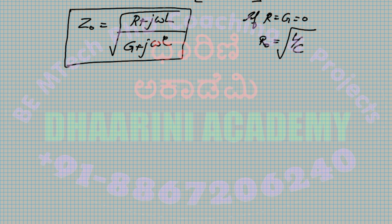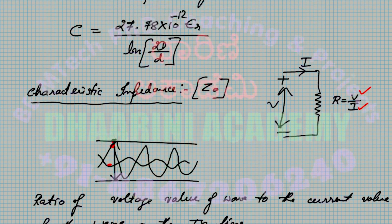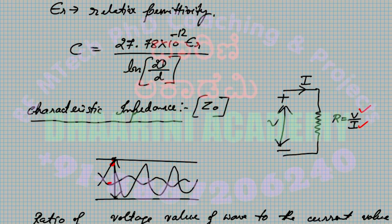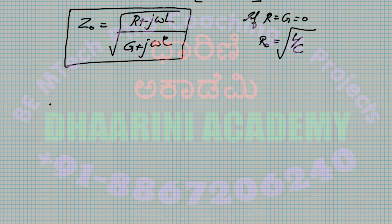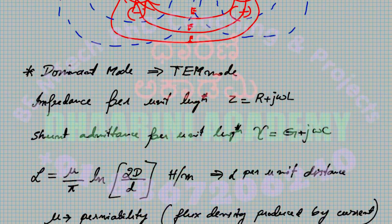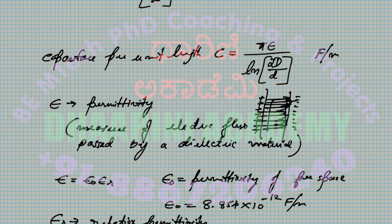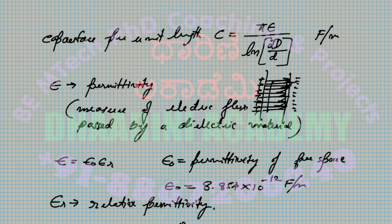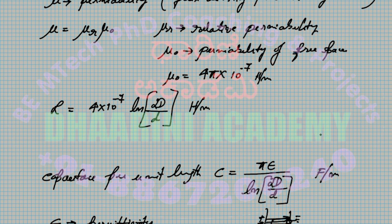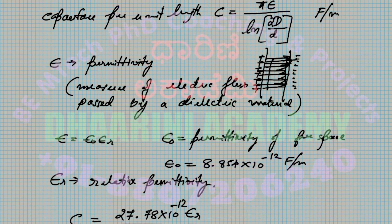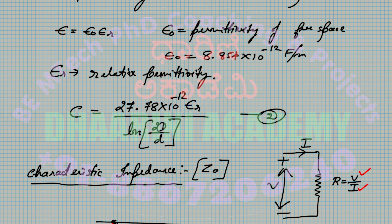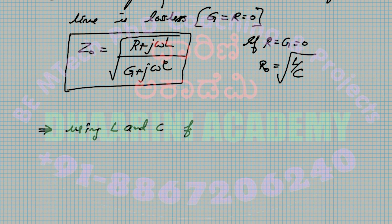Let us substitute the L and C equations obtained earlier into R₀ = √(L/C) to get another useful equation. With L = 4 × 10⁻⁷ · ln(2D/d) and C = 27.78 × 10⁻¹² · εᵣ / ln(2D/d), we substitute and simplify.